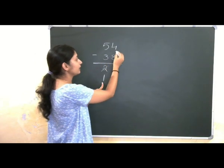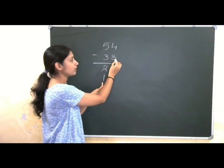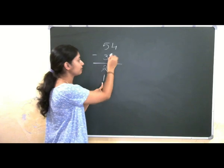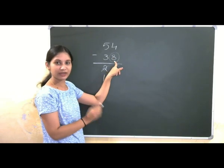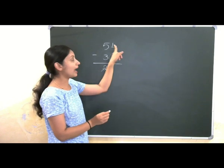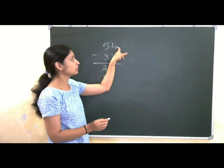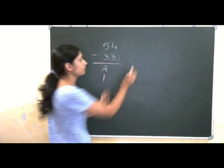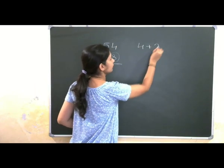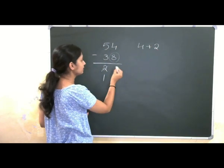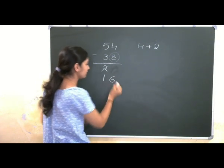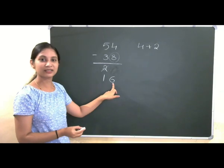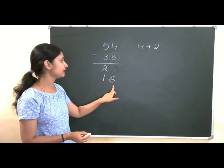Again, now we need to find out the complement of this number. 8. So, 2 is the complement of 8. We need to add that complement to the above number. 4 plus 2 we need to do. 4 plus 2 is 6. Directly we need to write that 6. 1, 6. We get the same answer. 16 is the answer.